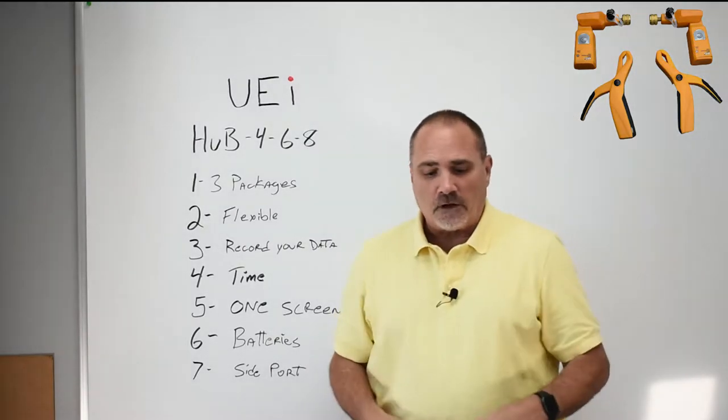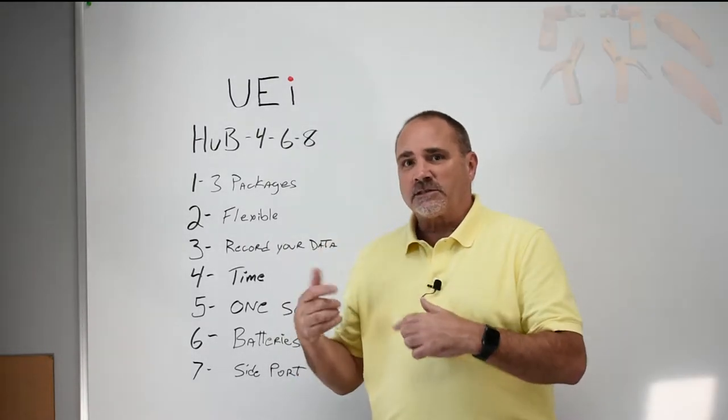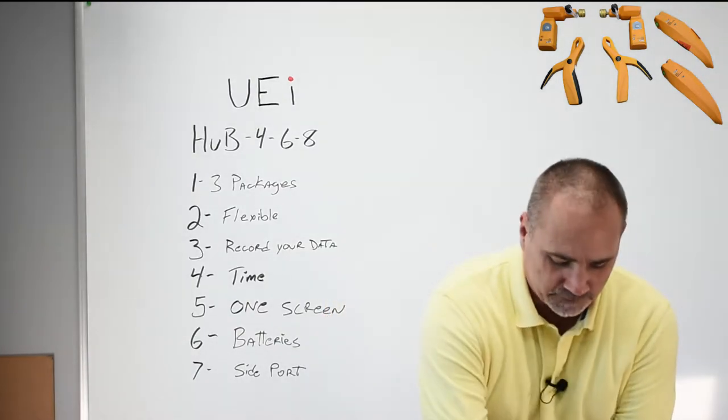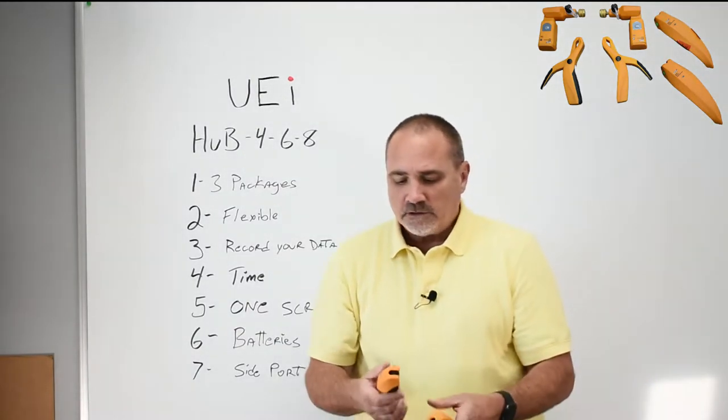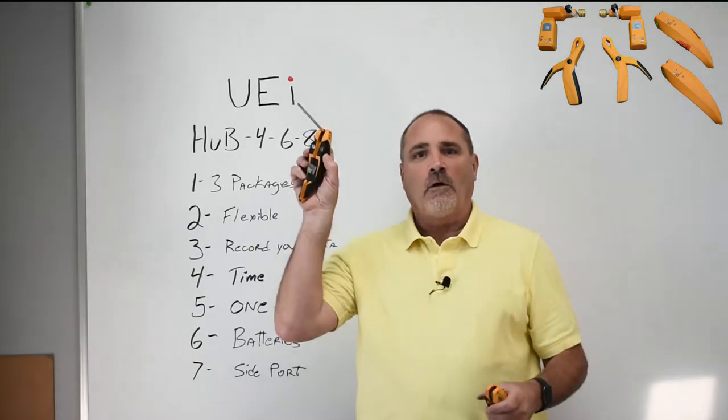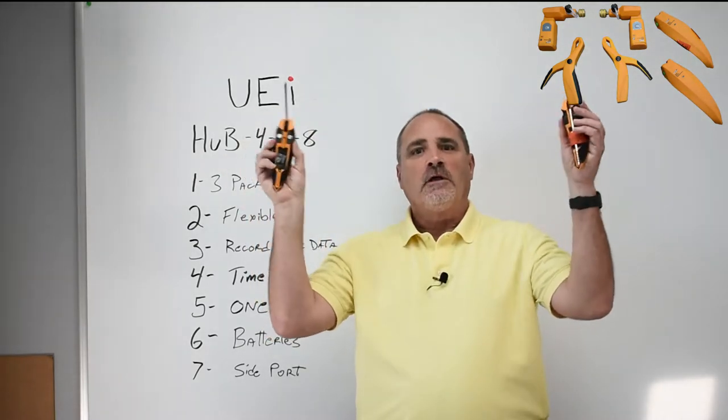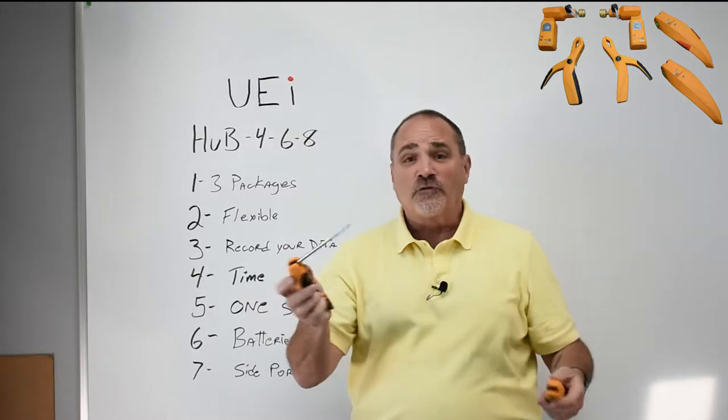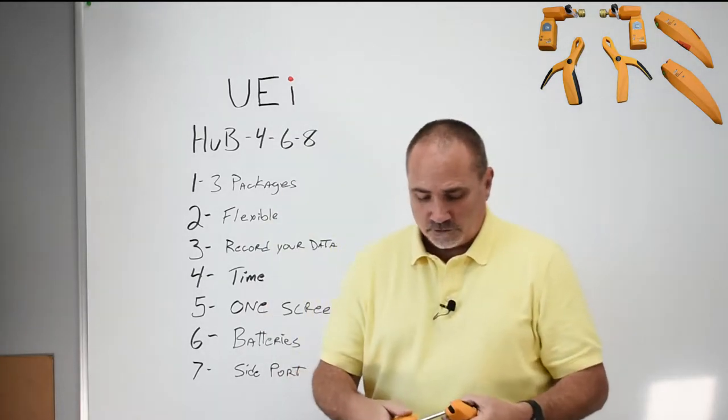And for most guys, that might be enough. Now, the 6 adds those four pieces and two temperature humidity probes. They have magnets here, so you bore a little hole. Supply, return. You put these things in. It goes right to your phone. Again, you can see everything on one screen.